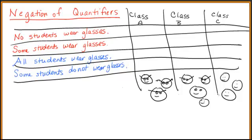So let's write down for each of these four statements, in which classrooms it's true and in which it's false. No students wear glasses. In class A, it's clearly false. In class B, no students wear glasses is false. And in the third class, it is finally true.